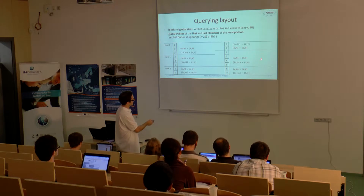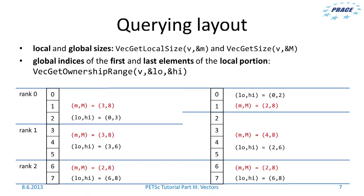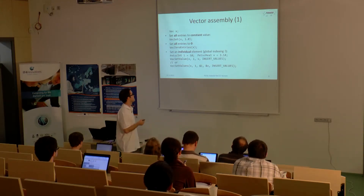For example, on the right side, on rank 1, you get lowercase m and uppercase M as 4 and 8, and the first and last elements — low and high — are 2 and 6. Now I will tell you how to assemble the vectors.